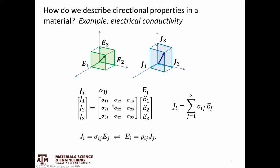And so this matrix, sigma sub ij, is what we call a rank 2 matrix, a rank 2 tensor. And a rank 2 tensor is just a fancy way to say a 3x3 array.